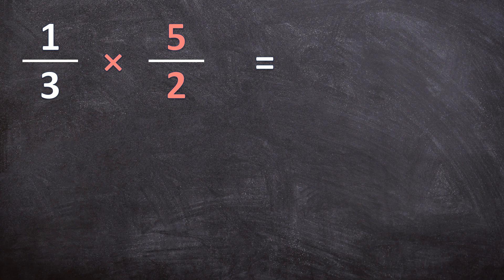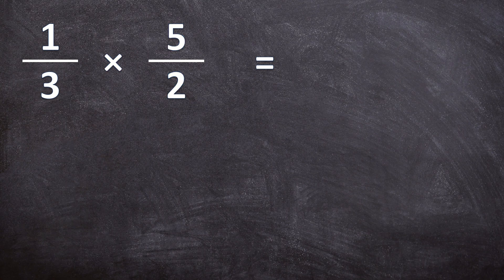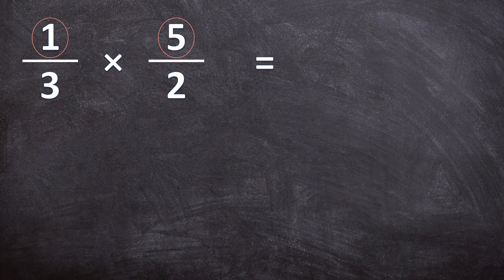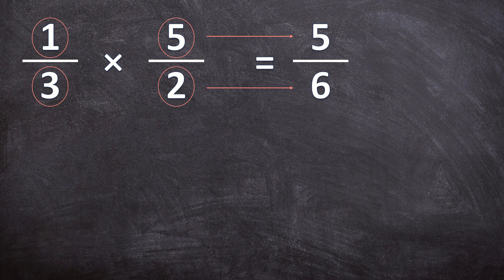So the first step, we multiply the numerators, 1 and 5, and 1 times 5 is 5, over 3 times 2 is 6. So you multiply the numerators and the denominators to get your answer. And remember to always simplify your answer. But in this case, 5 over 6 can't be simplified.